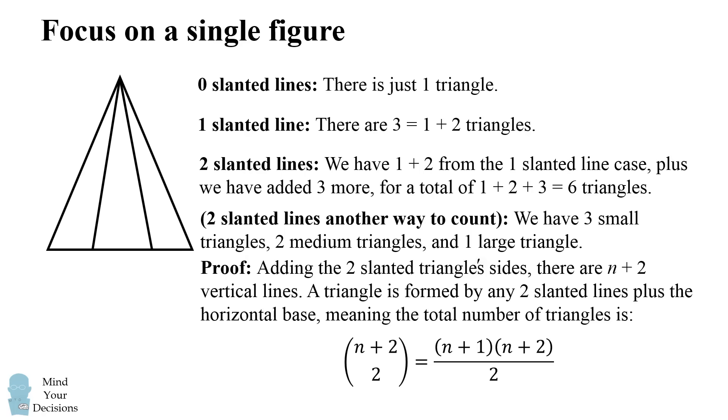So there are a total of n plus two vertical lines. A triangle is formed by any two of these slanted lines, plus the horizontal base of the triangle. So the total number of triangles will be n plus two, choose two, and that simplifies to be the quantity n plus one, times the quantity n plus two, all over two.